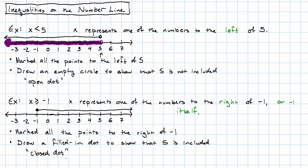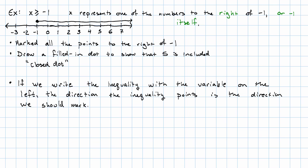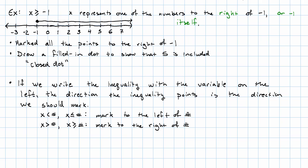How do we remember all of this? How do we remember what direction to go? If we write the inequality with the variable on the left, the direction the inequality points is the direction that we should mark. So if we have x is less than a number, or x is less than or equal to a number, we should mark to the left of that number. If we have x is greater than a number, or x is greater than or equal to a number, we want to mark to the right.